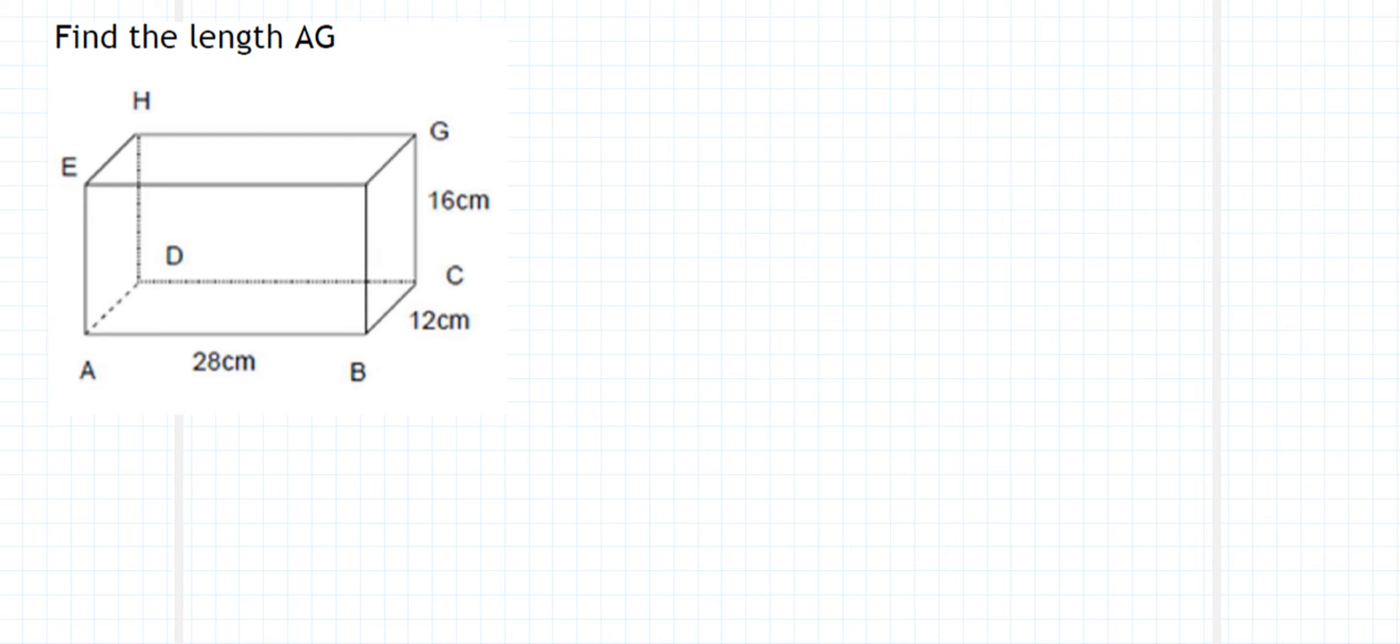In this question, we are asked to find the length of the distance between point A and point G. Just up there. And so essentially, we are trying to find the line A to G. So that line there that I've just marked in on the graph for you. So in order to do that, we need to find a few other bits and pieces first.